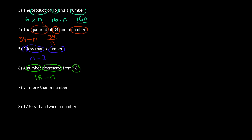Number seven: 34 more than a number. More than means the same thing as adding. Remember, in addition and multiplication the order does not matter. So we could write this as 34 plus n, or we could also write it as n plus 34 — it doesn't matter.